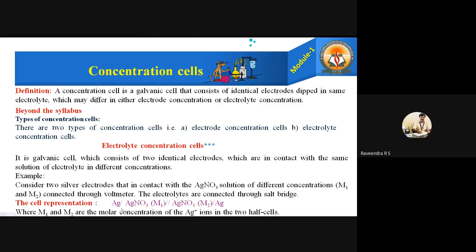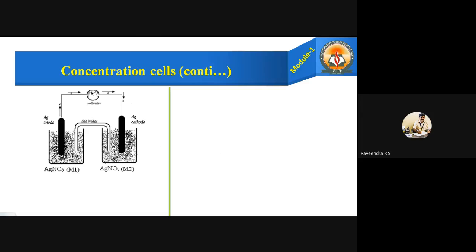The cell representation is: Ag | AgNO₃(M1) || AgNO₃(M2) | Ag. The extreme left and right are both silver — both electrodes, anode and cathode, are the same. The electrolyte is also the same: silver nitrate on both sides. The only change is concentration — the first silver nitrate concentration is M1 and the second is M2, where M1 and M2 are the molar concentrations of silver ions in the two half cells. The construction uses two beakers: one with silver nitrate of concentration M1, the other with silver nitrate of concentration M2, with a silver anode, silver cathode, salt bridge, and voltmeter.